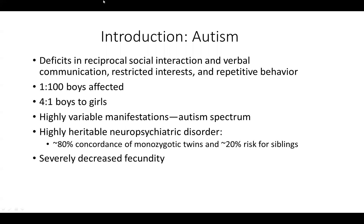To get everybody on board, I'll define what autism is. Autism is a disorder characterized mainly by deficits in reciprocal social interactions, verbal communications, and also restricted interests and repetitive behaviors — these I will refer to as core autism phenotypes. It's a highly prevalent disorder; about one in 100 boys are affected with autism, and it is gender-specific: four to one are boys to girls.